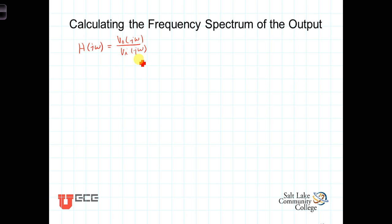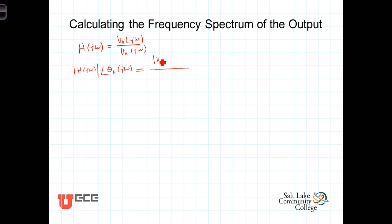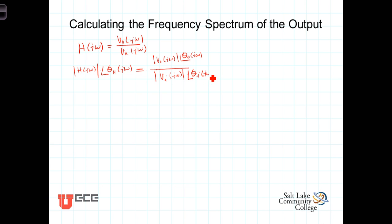Let's be a little more explicit. The frequency response has a magnitude and a phase: the magnitude of H of jω and an angle theta sub H of jω. This is equal to the magnitude of the output in its frequency manifestation, which includes a magnitude and a phase theta out of jω, divided by the spectrum of the input, which consists of a magnitude and a phase theta in of jω.